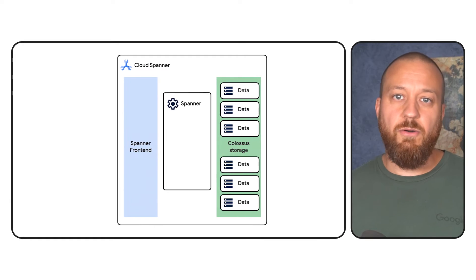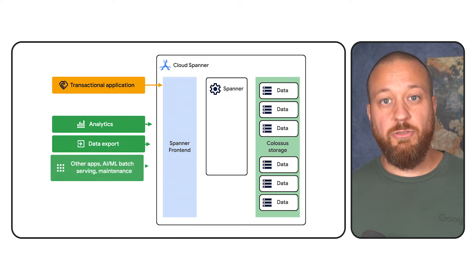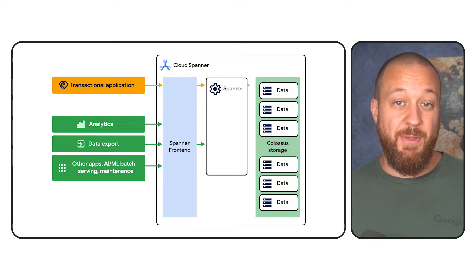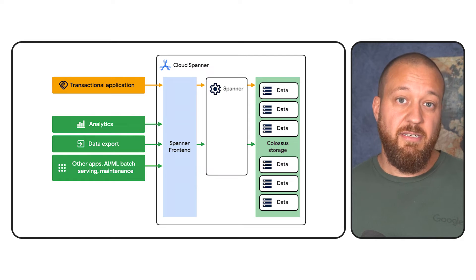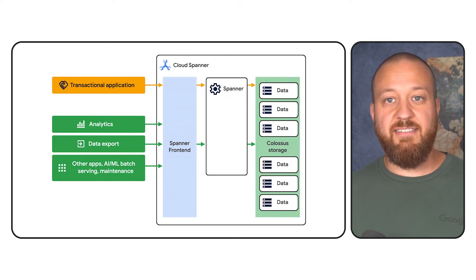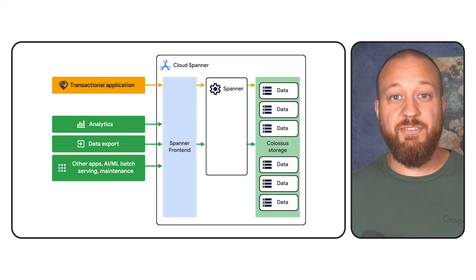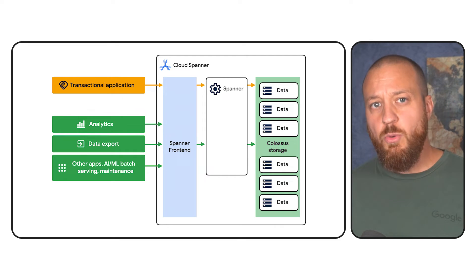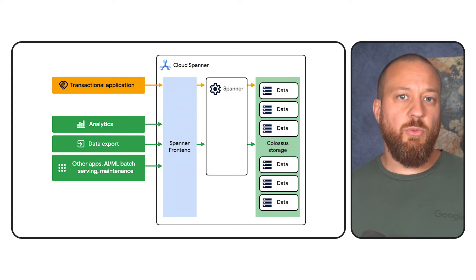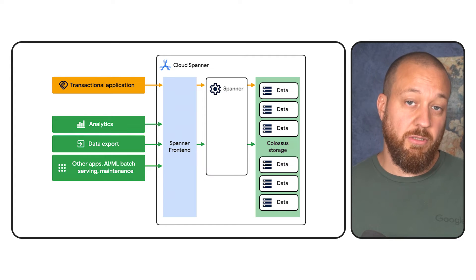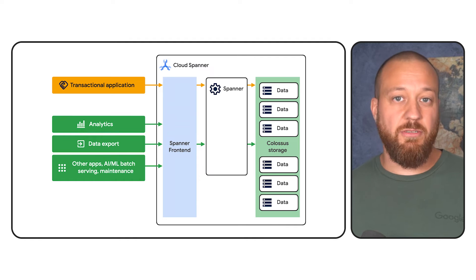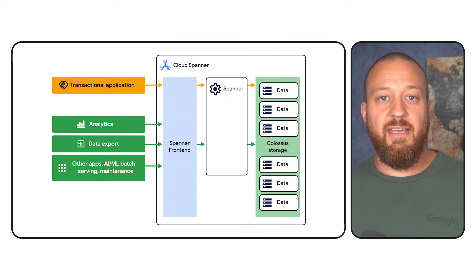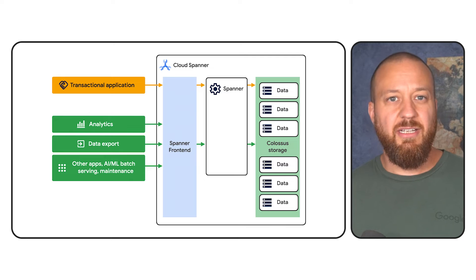Up until now, both operational and analytical workloads that access the data in Spanner would use the compute specified by your instance size. This might have led you to size the Spanner instance to provide enough compute capacity for frequent operational workloads as well as less frequent analytical workloads. Or you might have limited batch and analytic workloads to periods of low operational traffic, leaving your analysts with stale information.